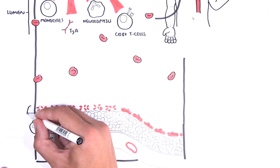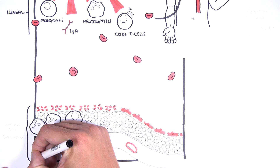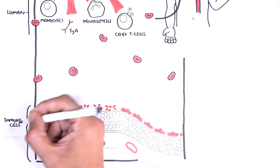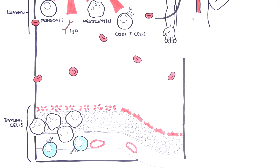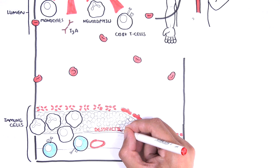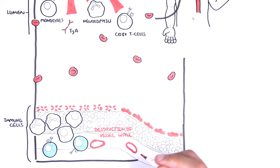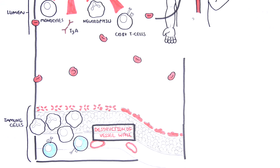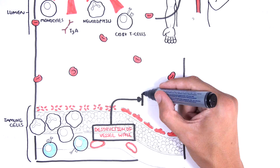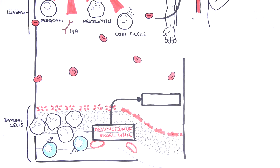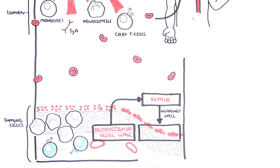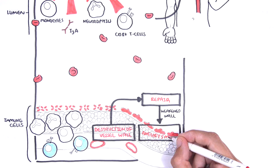This response can damage collagen and elastic fibers in the vessel walls, leading to loss of normal structural integrity. Despite the repair that occurs, the disrupted structural integrity results in ballooning or aneurysm formation.